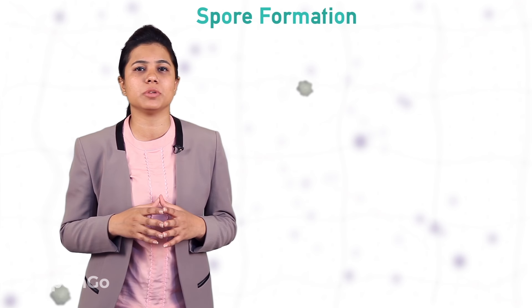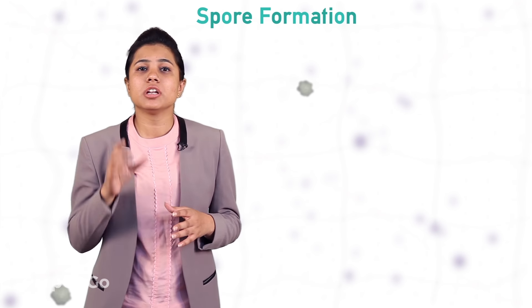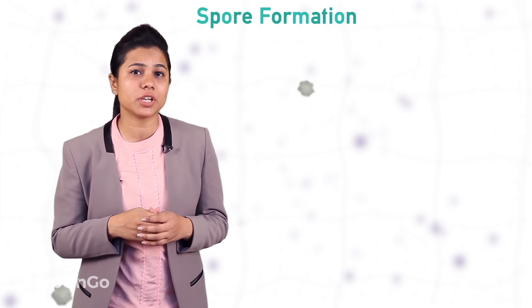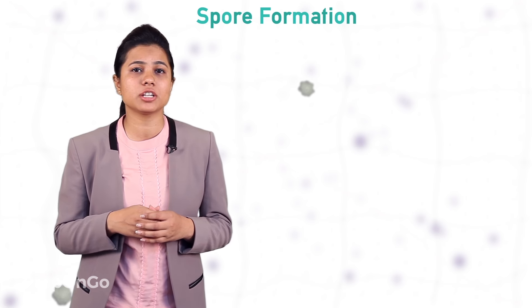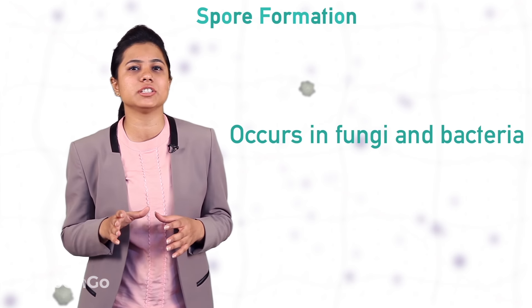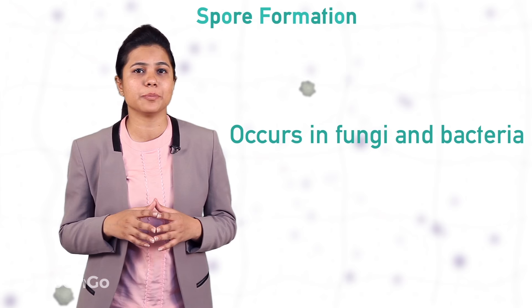Hello everyone. In the last video, we have seen vegetative propagation in plants, and in this video, we are going to see spore formation. Spore formation is another type of asexual reproduction which occurs in the majority of fungi and bacteria.